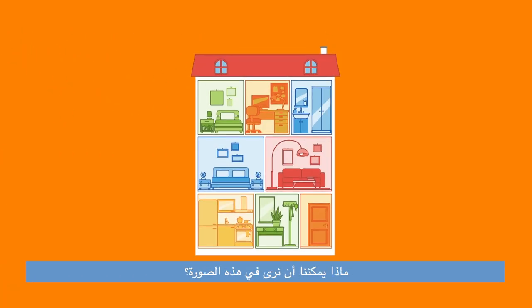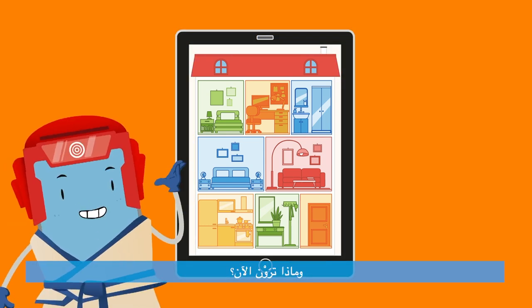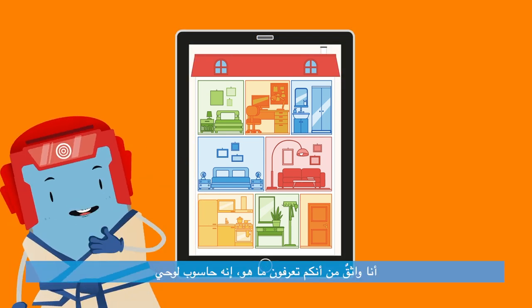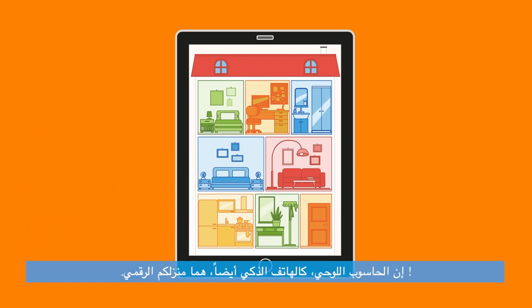What can we see in this image? Well, the answer is really simple — it's a house! What about now? I'm sure you know what it is. It's a tablet. A tablet, like a smartphone, is your digital home.